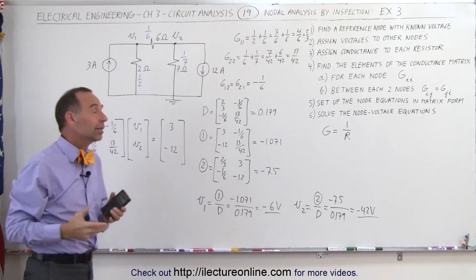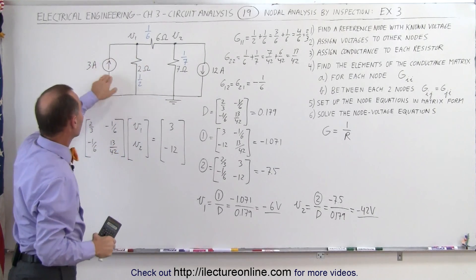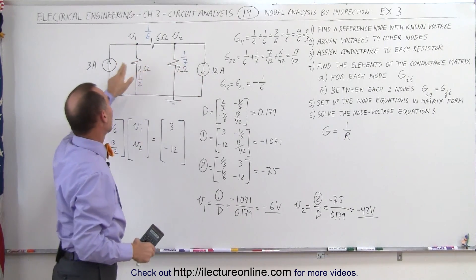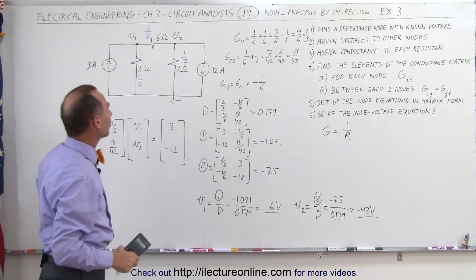Which then overwhelms this current right here, causing that to be a negative voltage. So in the end, when you look at the circuit, you look at the current sources, this 12 amps does drive the voltage down in V1 and V2, overpowering the current source on the other side of the circuit.